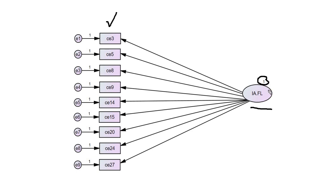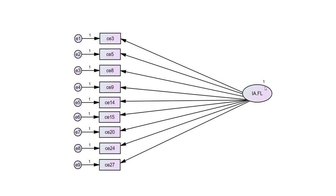Looking at our factor model, you can see that above the factor I affixed the factor variance to one. This was done for identification purposes and will also be useful when estimating reliability. All latent variables and measurement errors have to have a measurement scale associated with them. One way to set the measurement scale for a latent factor is to fix the variance to one. Another option is to use a reference indicator approach and fix a path coefficient to one.